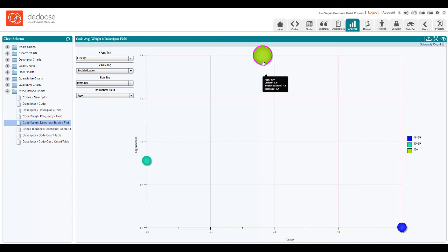So what we see in this bubble is that for the 50 plus members of our sample, when they spoke about sophistication—that's the x-axis—and intimacy—the y-axis—they spoke about these dimensions as particularly important in their decision. The size of the bubble itself is the average weight assigned when we use the luxury tag, and they sort of sit in the middle of the population for that one.